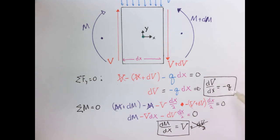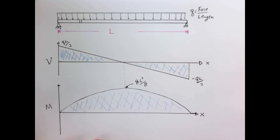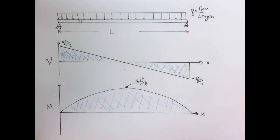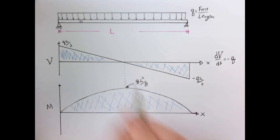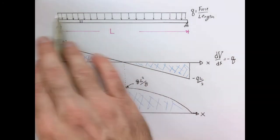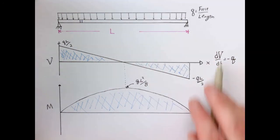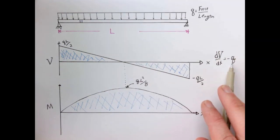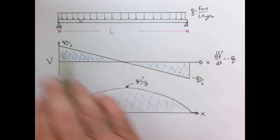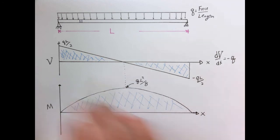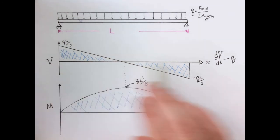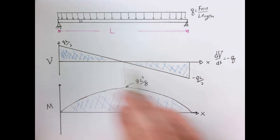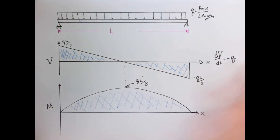Returning to our original shear and bending moment diagram: since dV/dx = -Q and Q is constant, the shear diagram has a constant slope, meaning it is a linear function. We can verify this — the slope is -Q, and the change from QL/2 to -QL/2 over length L gives a slope of exactly -Q. This is consistent with what we derived before.